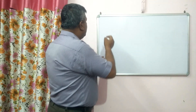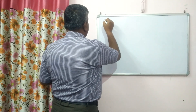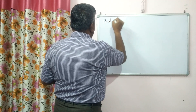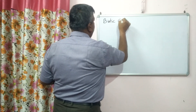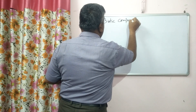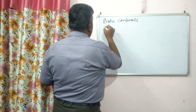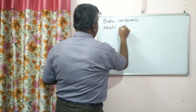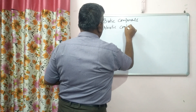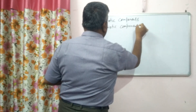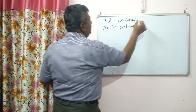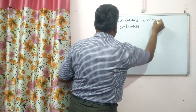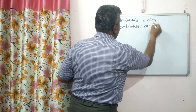If we talk about the living component, it is known as biotic component, and non-living are abiotic components. As the name indicates, biotic means these are the living, and abiotic means non-living.